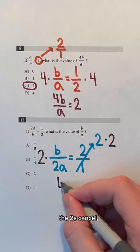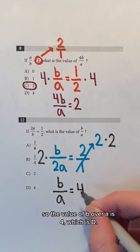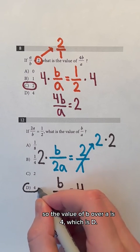On the left side of the equation, the 2's cancel and on the right side of the equation, 2 times 2 is 4, so the value of B over A is 4 which is D.